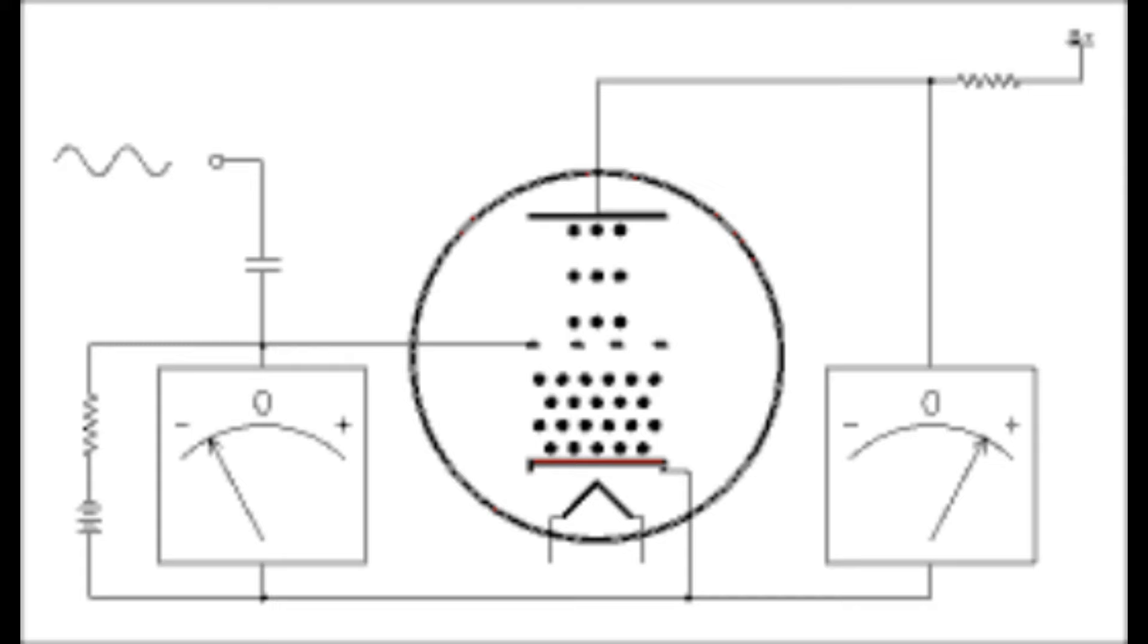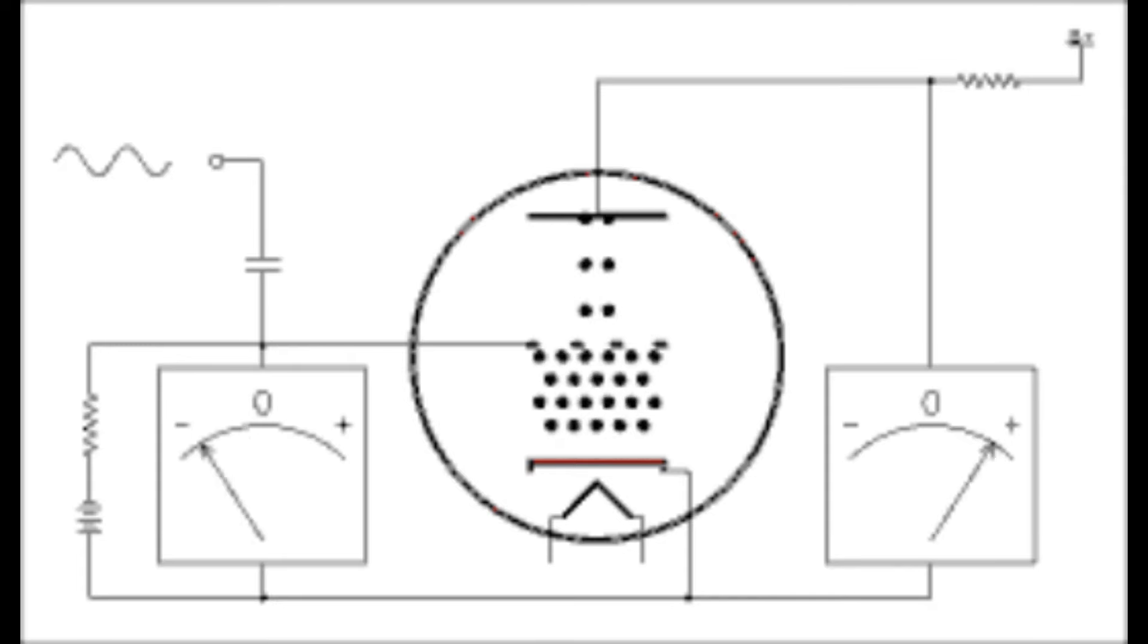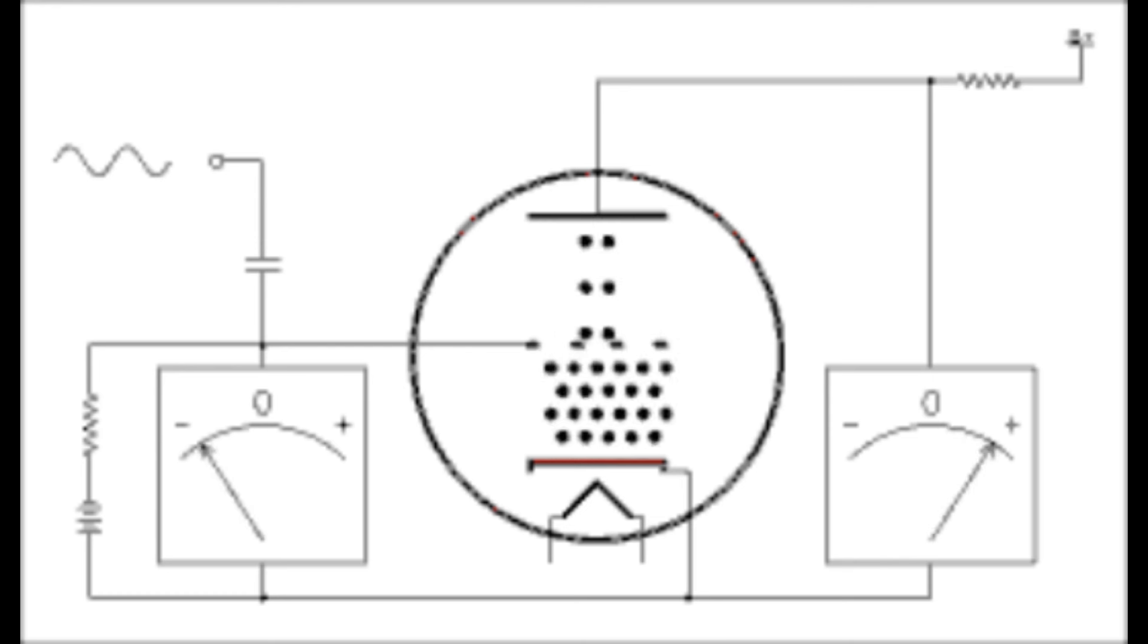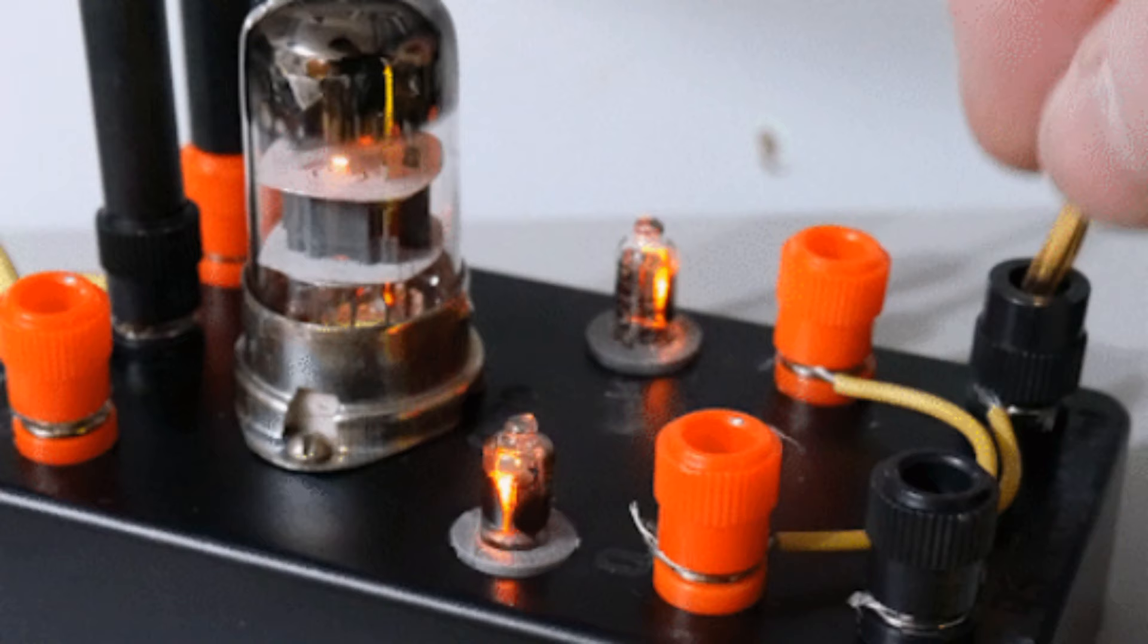But it was the audacious Lee de Forest who dared to dream beyond the confines of existing knowledge. In 1906, he introduced the world to the Audion, a triode vacuum tube that could amplify signals, setting the stage for a technological revolution.